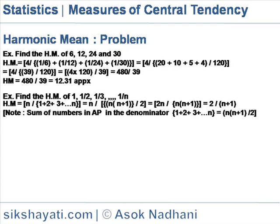Using the formula for the sum of n natural numbers, this simplifies to n divided by n(n+1), which equals 2/(n+1). So the HM of 1, 1/2, 1/3, …, 1/n is 2/(n+1).